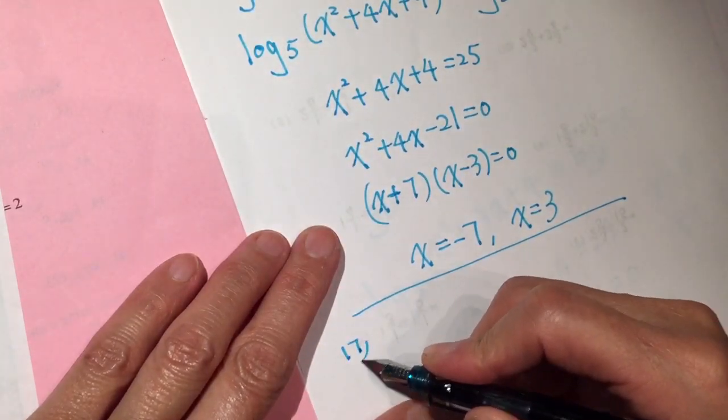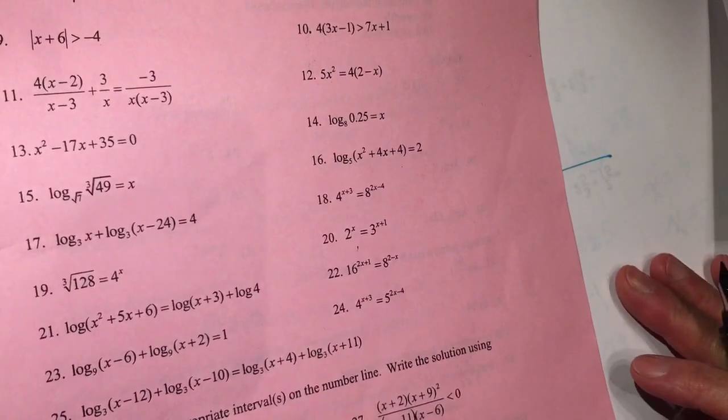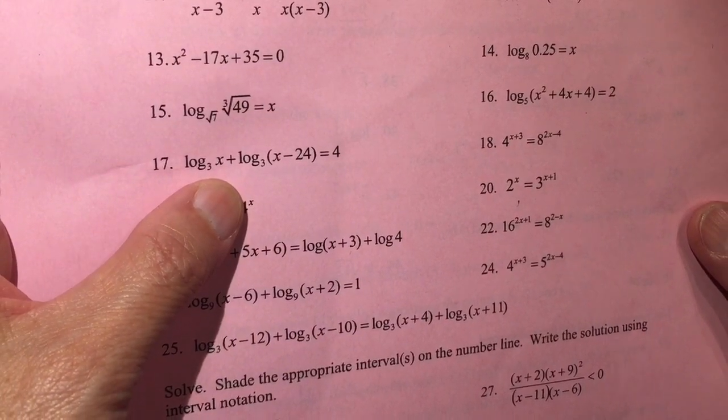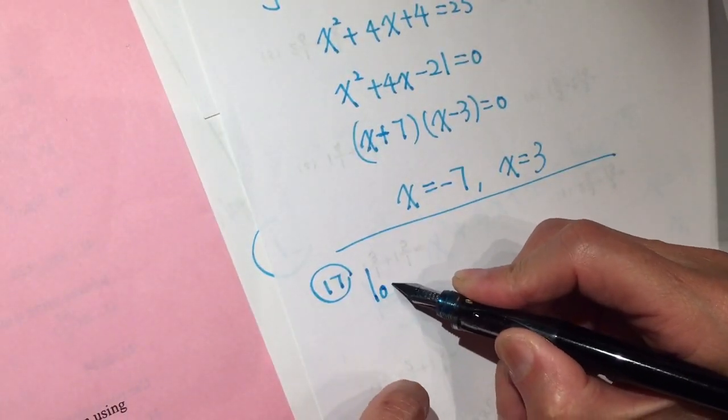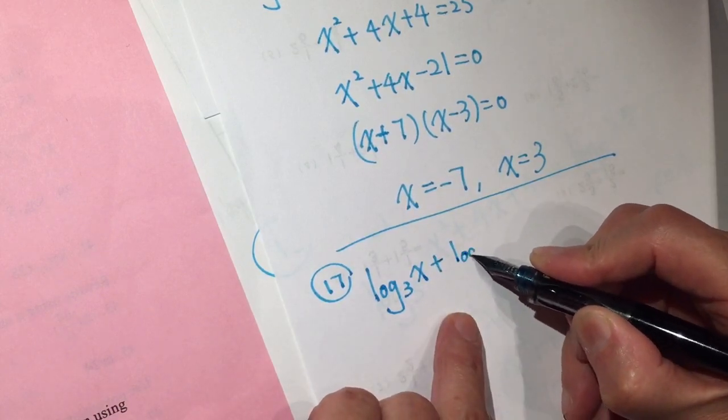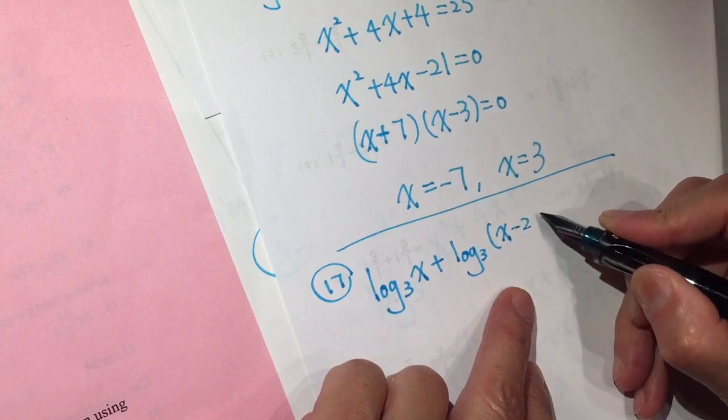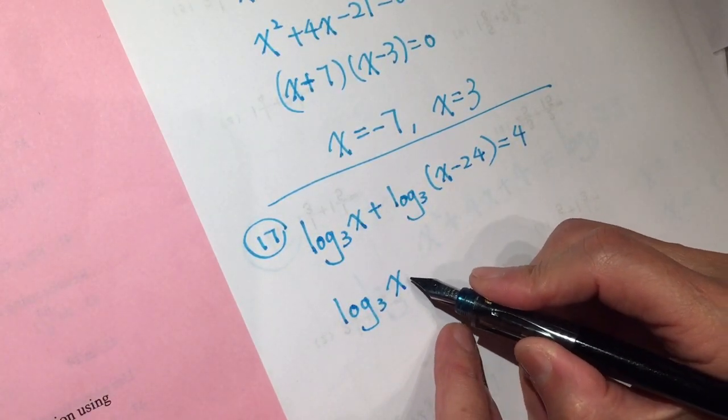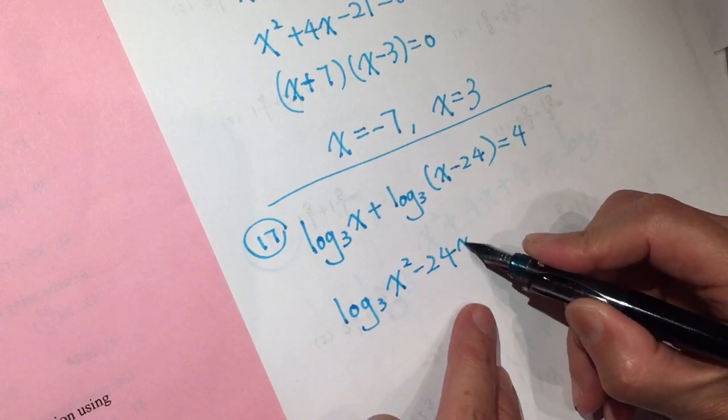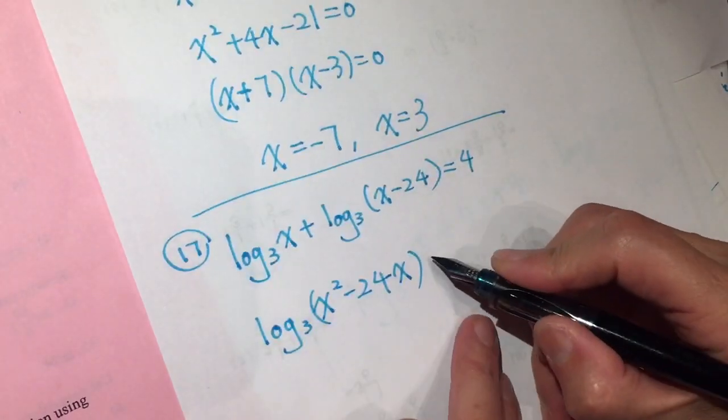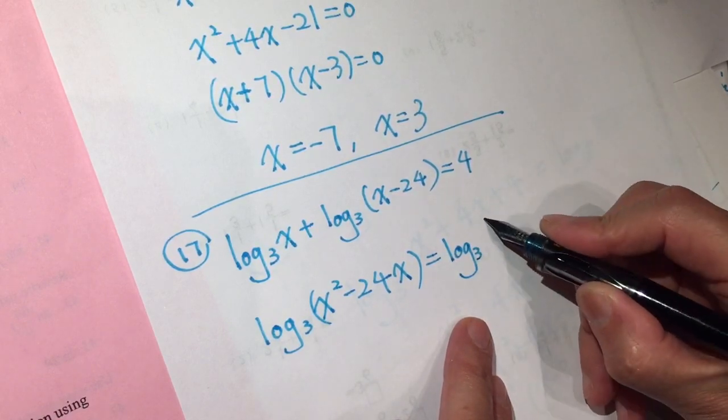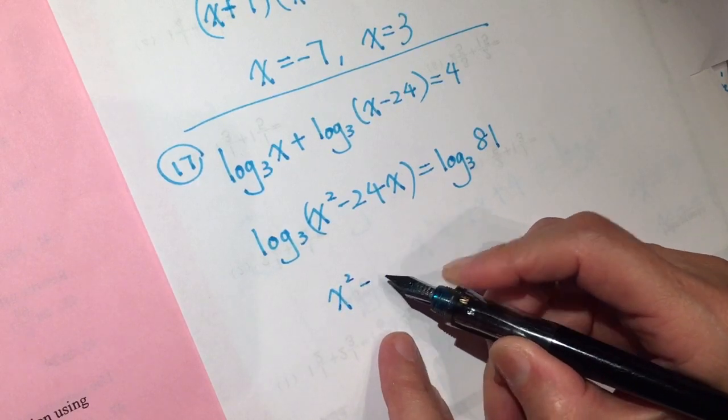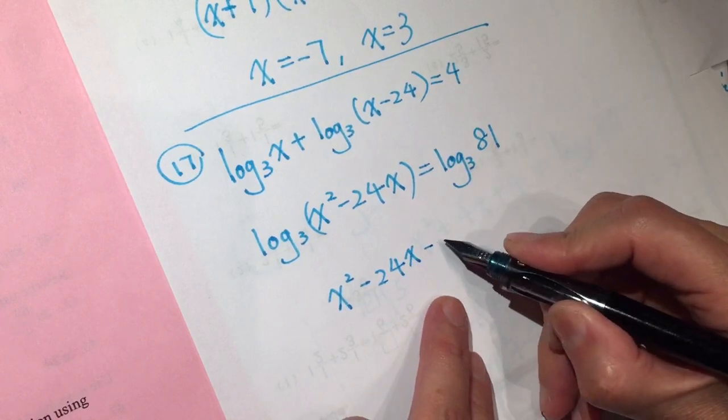Number 17. Log 3x plus log 3 times x minus 24 equals 4. What we can do, we can do log 3 times x squared minus 24x, because you can tie it together. Log 3 of 81, because 81 is 3 to the power of 4, right? So x squared minus 24x minus 81 equals 0.